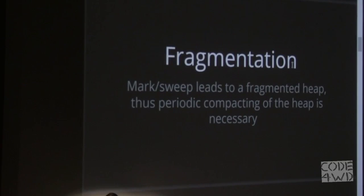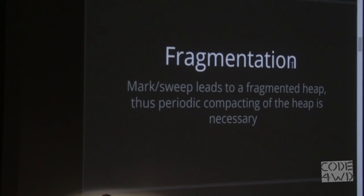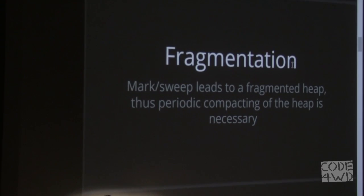Mark and sweep suffers from a fragmentation problem. When we mark live objects and leave, the heap may have holes — a used object at the start, a couple of holes where we could fit objects but the memory is not used, and then more used objects. Typically in a garbage-collected language, memory is allocated at the end of the heap using a pointer that increments with each allocation, minimizing allocation time. If you don't deal with those holes, you keep using more and more memory when in reality you could fit all those objects at the start.